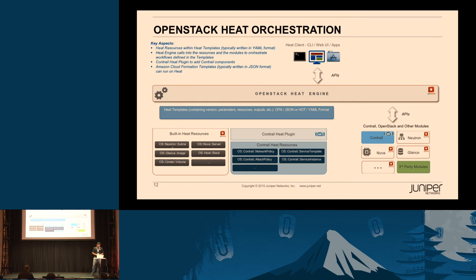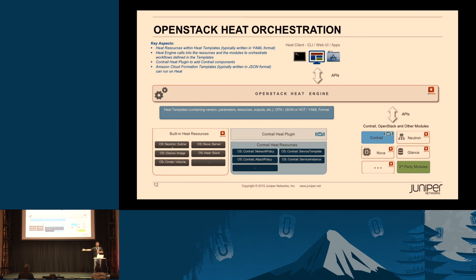You have the Heat engine, and underneath it you have the Heat templates with built-in Heat resources from OpenStack. On top of that, you see the Heat plugin that Juniper Contrail has implemented. Within the Heat resources, you'll see resources corresponding to the Neutron extensions Contrail has added — namely network policy, the ability to attach a policy, create a service template, and actually deploy a service based on that template. That's the value we have added, and that's what we are here to demonstrate.